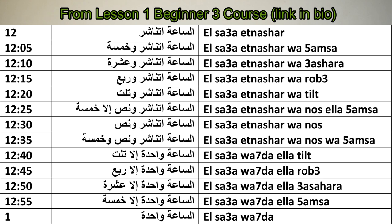We have to know ربع, which is a quarter; نص, which is half; and تلت, which is a third. Let's say the time. For example, if the time is 1 p.m. exactly, we say الساعة وحدة — not واحد, because الساعة is feminine. Now 1:05 is الساعة وحدة وخمسة, 1:10 is وحدة وعشرة. And then 1:15, we say الساعة وحدة وربع.